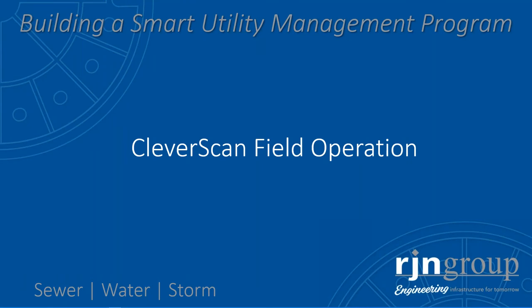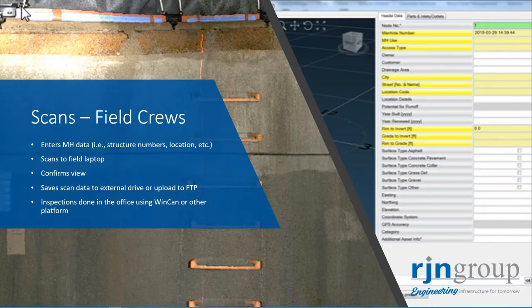In the field, when the field crew arrives on the job site, they have the Cleverscan unit connected to a laptop. They will enter the manhole data onto their laptop, do a quick scan — which takes about 30 seconds — review the scan itself, and then move on to the next structure. If all goes well, they can do up to 40 scans per day.